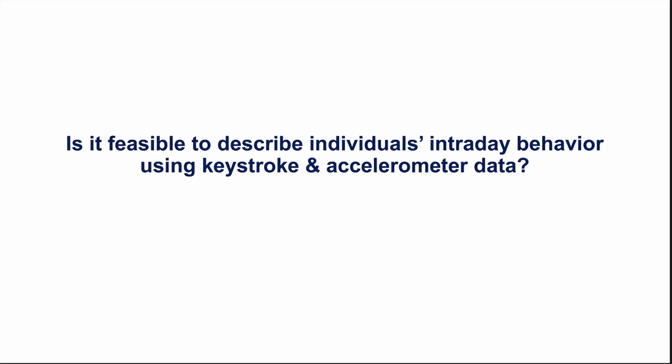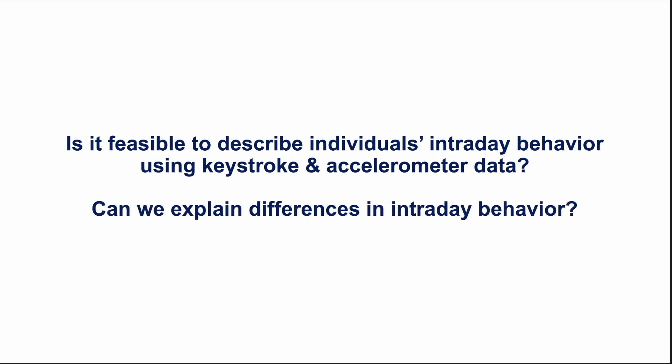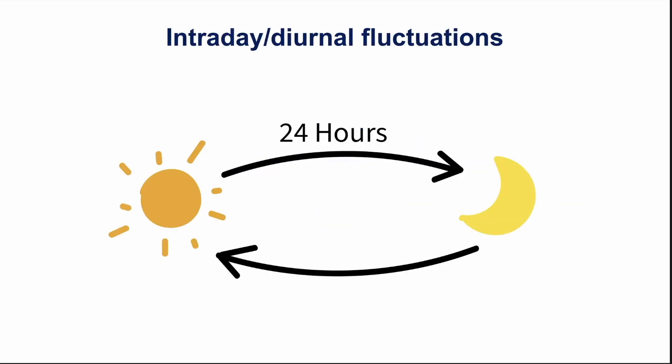So that led us to ask the question: is it feasible to describe individuals' intraday behavior using keystroke and accelerometer data? And if so, can we explain differences in people's intraday behavior? Specifically, intraday or diurnal fluctuations refer to behavioral rhythms synchronized with the day-night cycle with a period of 24 hours. It has been shown that humans show diurnal fluctuations in alertness and overall cognitive functioning, so our attempt here is to explore whether unobtrusively captured keyboard and accelerometer data show diurnal patterns.